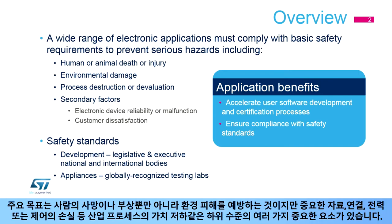The primary goal is to prevent human death or injury, as well as environmental damage. There are also many other important factors at a lower level, such as the devaluation of an industrial process, including the loss of important data, connections, power, or control.